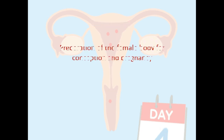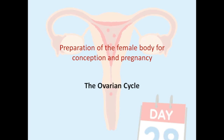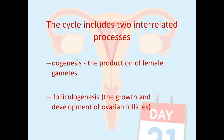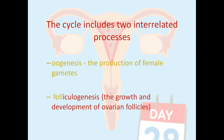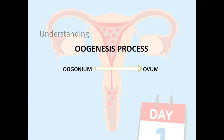Let's move on to the details of the first phase, which is the focus of this lecture. It begins with the ovarian cycle — the events occurring in the ovaries for preparation of conception and pregnancy. The ovarian cycle includes two very important interrelated processes: first, oogenesis, in which female gametes or ova are produced; and second, folliculogenesis, the formation of ovarian follicles.